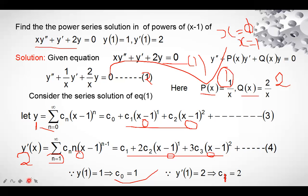Now find y''. Differentiating y' gives y'' = Σ (n=2 to ∞) cₙ·n(n−1)(x − 1)ⁿ⁻². We then substitute y, y', and y'' into the given equation x·y'' + y' + 2y = 0.